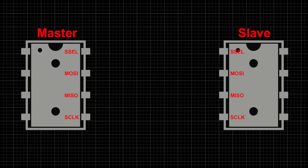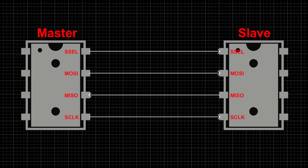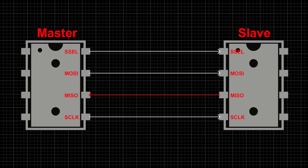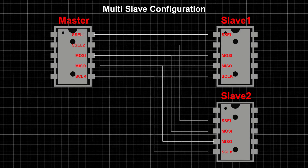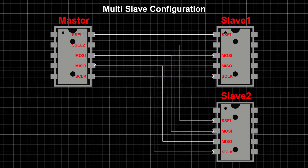For the master and the slave device to transmit data over SPI, four lines are required: the slave or chip select, master out slave in, master in slave out, and the clock line. The master selects the slave device to communicate with using the slave select line, transmits data over MOSI, and receives data from the slave over MISO. The master generates clock pulses for synchronization. Since SPI is a bus, the master can communicate with more than one slave device, with an additional slave select line required for each additional slave.